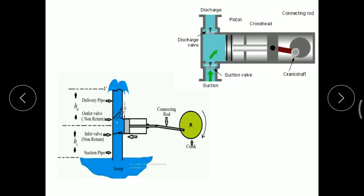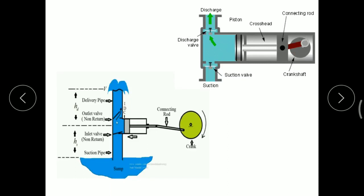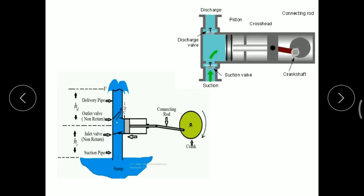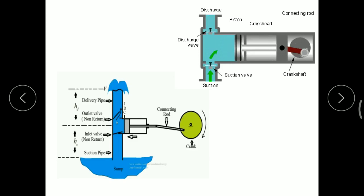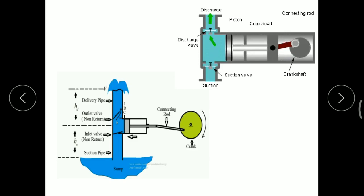Hello everyone. Today we are going to cover two points in this lecture. First one is an air vessel and second one is an indicator diagram for reciprocating pump. In the last lecture we studied the construction and working of reciprocating pump and slip of the pump.